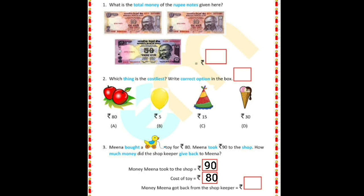Question number two: which thing is the costliest? As we can see, two apples cost rupees 80, a balloon costs rupees 5, a cap rupees 15, and an ice cream cone rupees 30. So apples are the costliest.